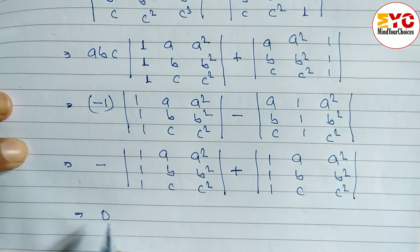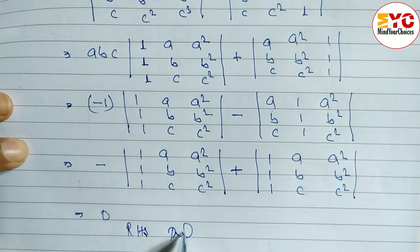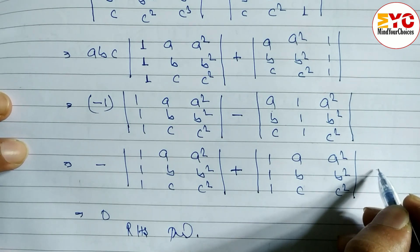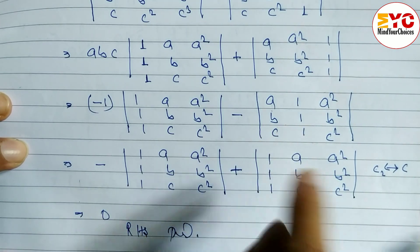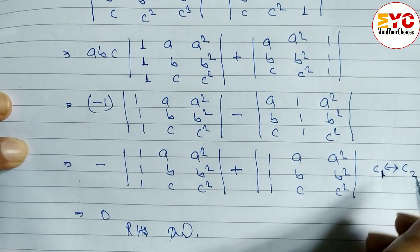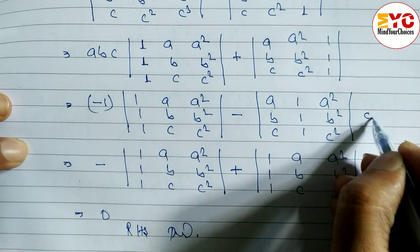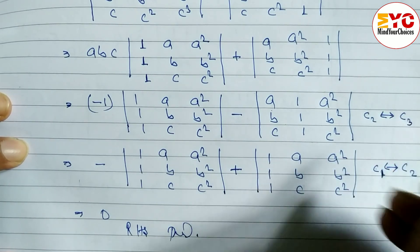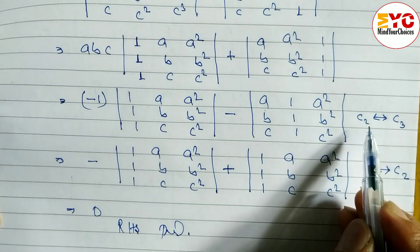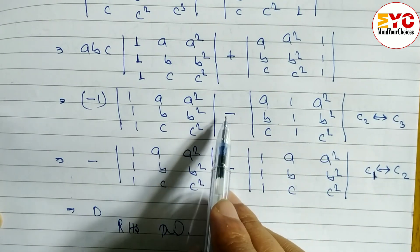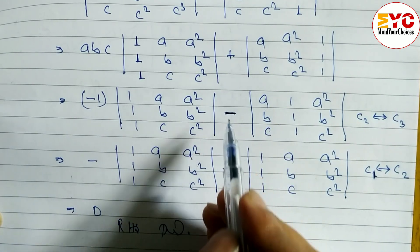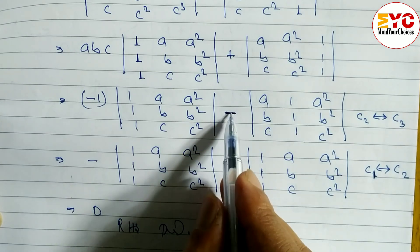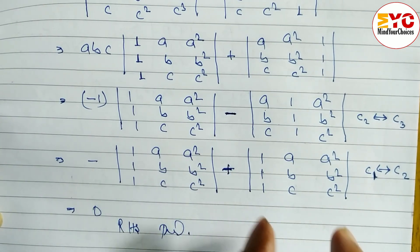One matrix is positive and the other is negative, so they cancel to give zero, which equals the RHS — proved. To summarize: we interchanged column 2 and column 3 (C2 and C3), and then column 1 and column 2 (C1 and C2). Each interchange introduces a negative sign, so two interchanges give minus times minus, which is plus, making the first term positive.